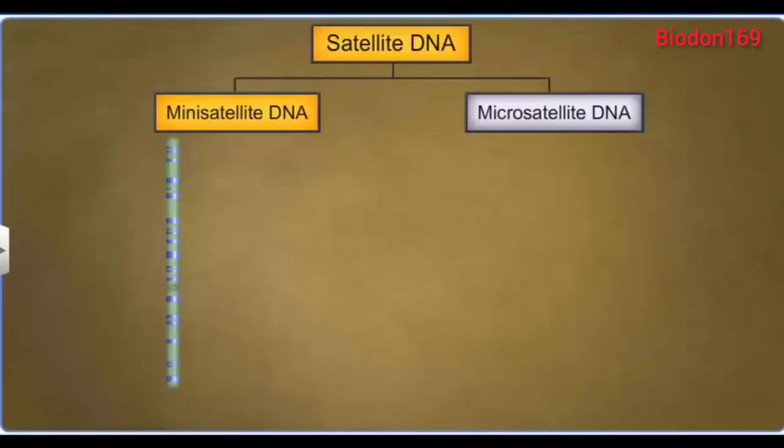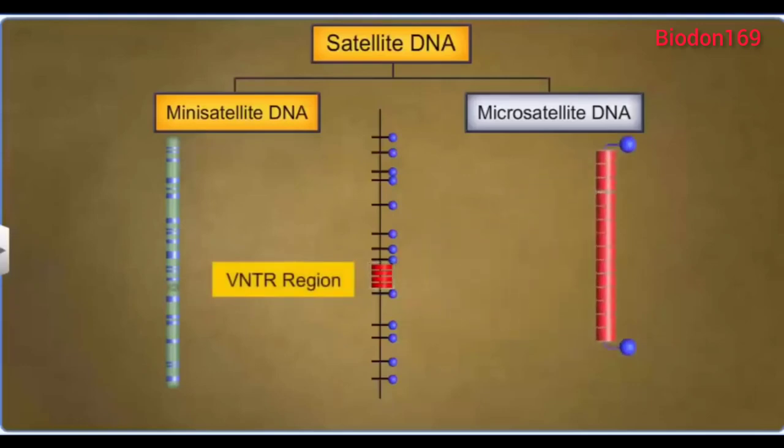Mini-satellite DNA is a section of DNA which has a variable number of tandem repeats, or VNTR. It has sequences of 15 to 100 base pairs repeated hundreds or thousands of times.